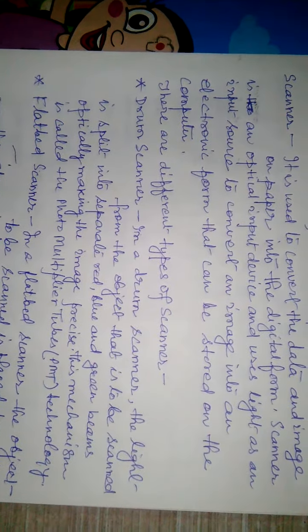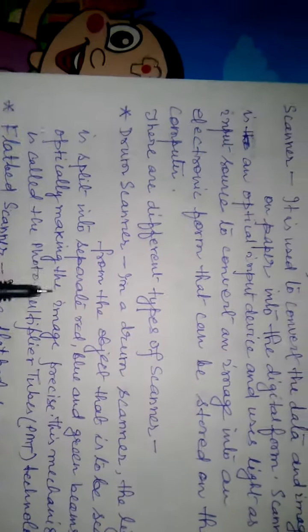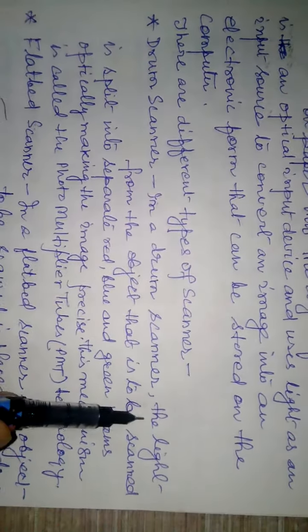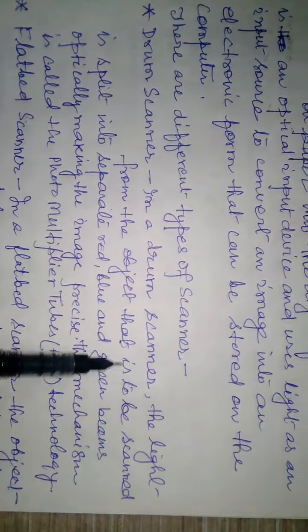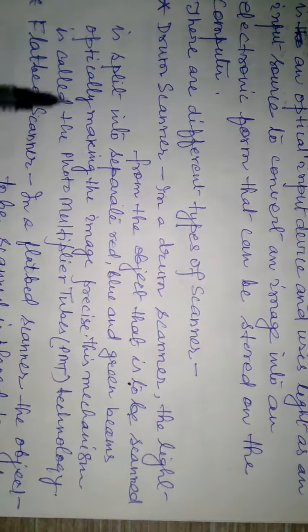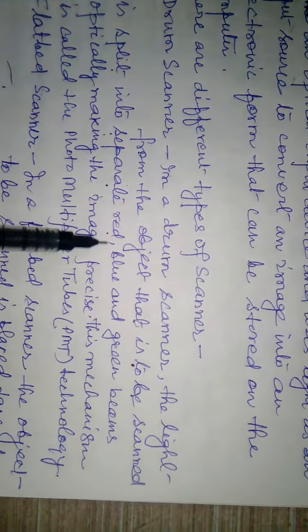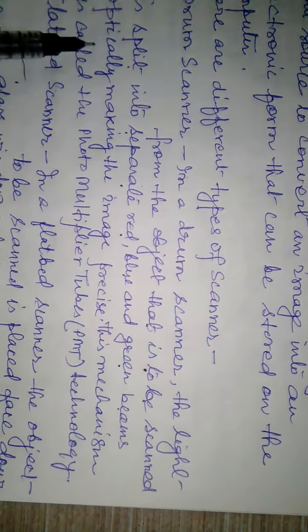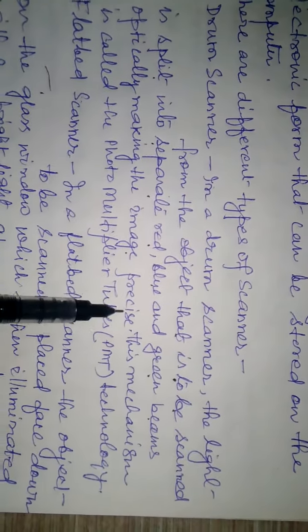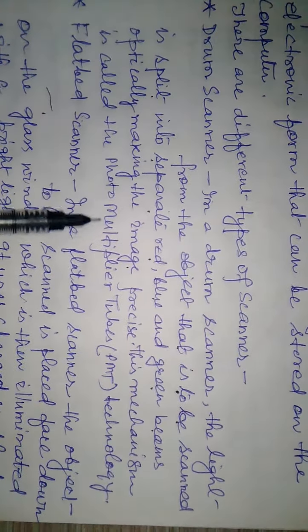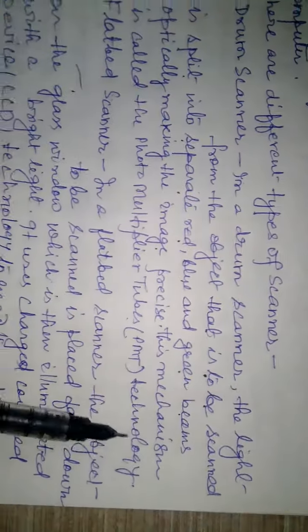Drum scanner. In a drum scanner, the light from the object that is to be scanned is split into separate red, blue, and green beams, optically making the image precise. This mechanism is called the photo multiplier tube technology.